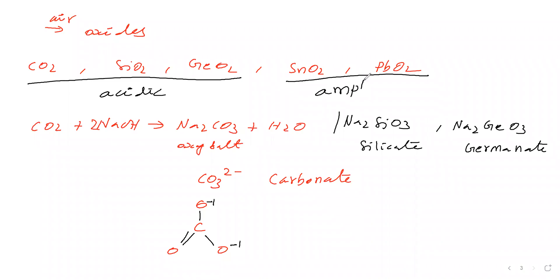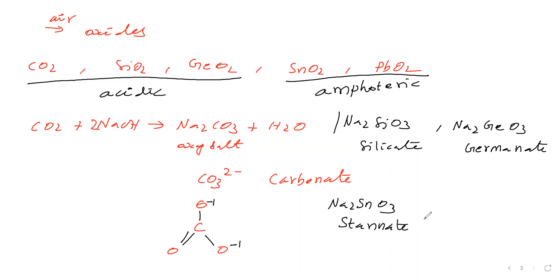SnO2 and PbO2 are amphoteric oxides. Being amphoteric, they also react with a strong base: SnO2 with NaOH gives Na2SnO3, called stannate (from the Latin word 'stannum' for tin). PbO2 gives Na2PbO3, called plumbate (from the Latin word 'plumbum' for lead).